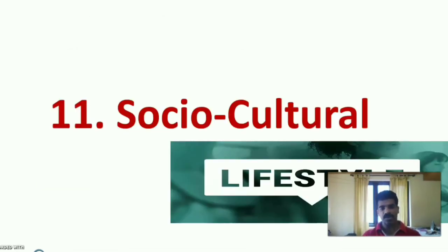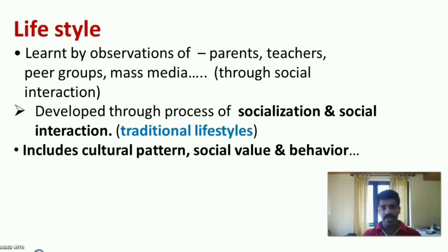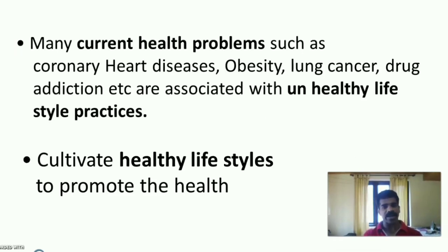The eleventh factor is socio-cultural factors. Lifestyle depends on economic status — rich or poor — cultural values such as vegetarianism or non-vegetarianism, and social values such as the status of women. Lifestyle is learned by observation of parents, teachers, peer groups, and mass media through social interactions. Lifestyles developed through socialization are called traditional lifestyles. Lifestyle includes cultural patterns, social values, and behavior. Many current health problems such as coronary heart disease, obesity, lung cancer, and drug addictions are associated with unhealthy lifestyle practices.